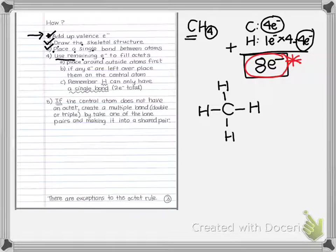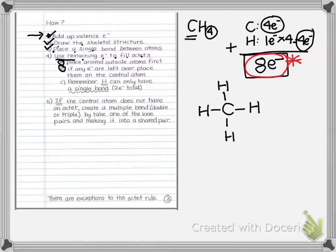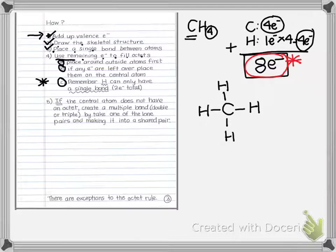Step four says to use any remaining electrons to fill the octets. Place them around the outside atoms first. If any electrons are left over after that, place them on the central atom. And remember, hydrogen can only have a single bond.